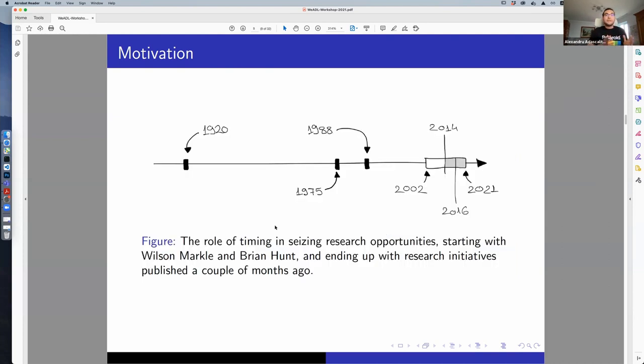In terms of timing, since 1920, the world received the possibility to take pictures in color with batches of film like Kodak. In 1975, the first digital camera was available and we could store them as digital files. Only after 1988, colorization attempts begin to arise. And only between 2002 and 2021, deep learning methods were employed.